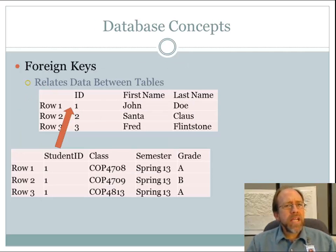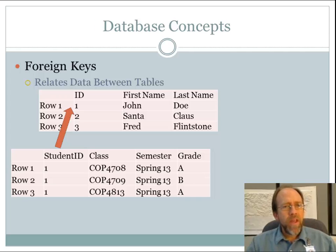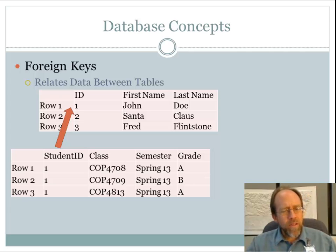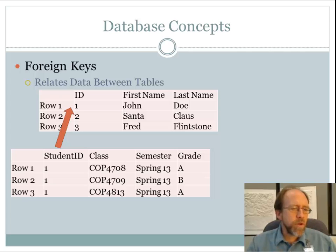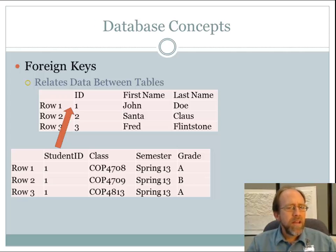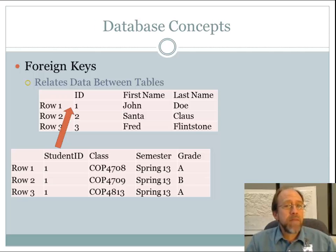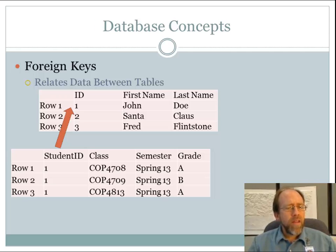What makes it relational is the ability to have multiple tables that can relate to each other. For example, I have John Doe with an ID of 1. If I look at my other table and find a student ID with a value of 1, what I'm saying is that the data in that row pertains to the person identified in the other table. So the three rows shown have student ID 1, meaning John Doe took these three classes and got these three grades. In reality, managing classes and grades is more complex, but this simplification shows the concept. The relationship between these tables is called foreign keys.